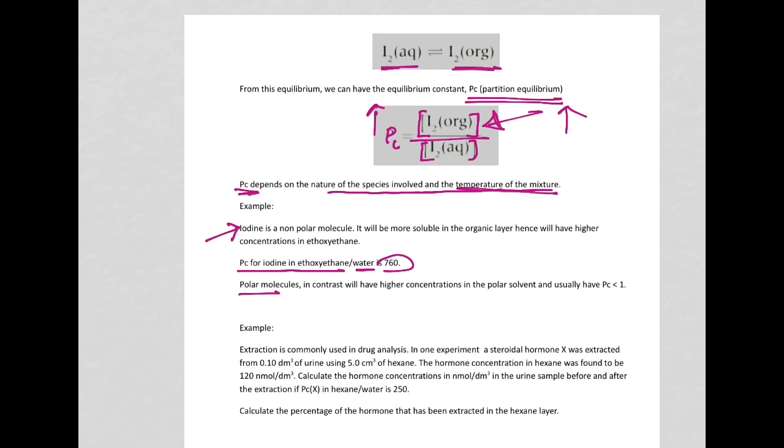Polar molecules, in contrast, will have a higher concentration in the polar solvent. And therefore, their PC value will be low. So if concentration of any substance is high in the aqueous solvent, then PC is going to be low. So this is what it means.